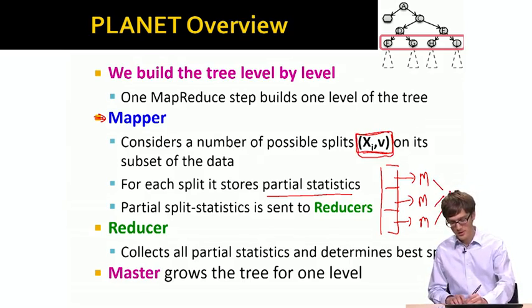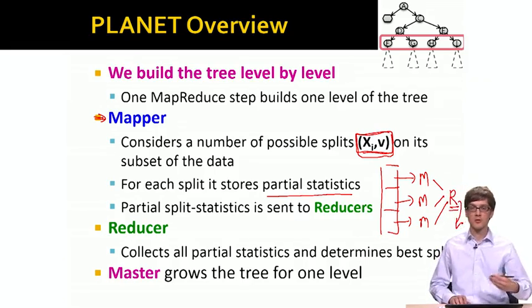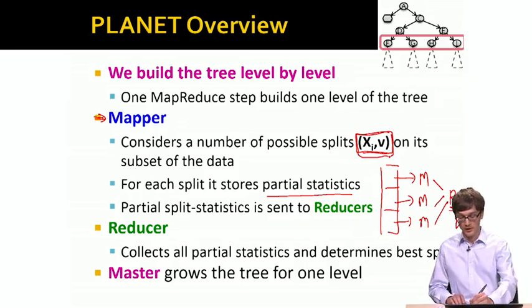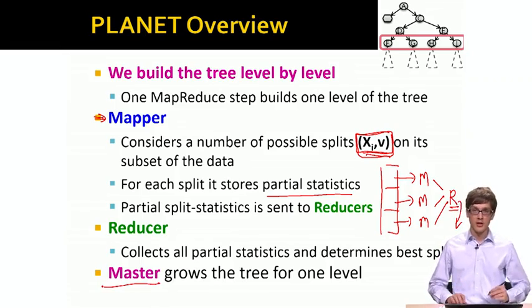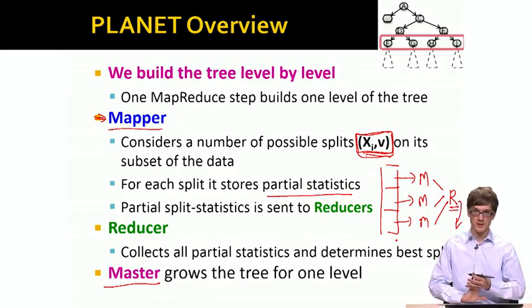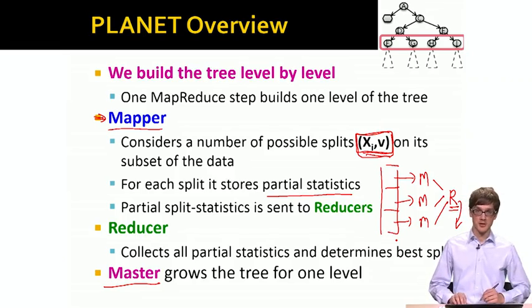All these partial statistics will be sent to the reducer, who will then output the final score or the final quality of the given split. And then master then decides which split to take and grows the tree by additional level. So this is generally the idea. The mapper will allow us to take this big data file, split into chunks, compute statistics of it on subsets of the data. Reducer collects the thing and lets the master know to make the final decision.